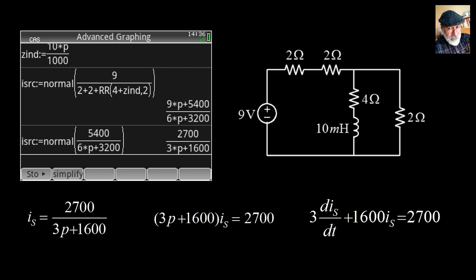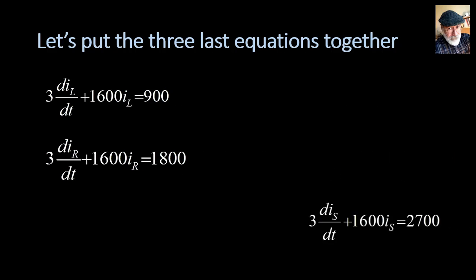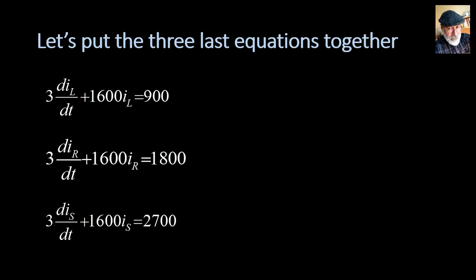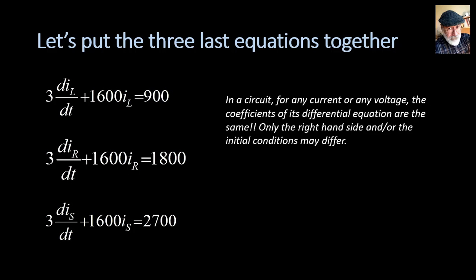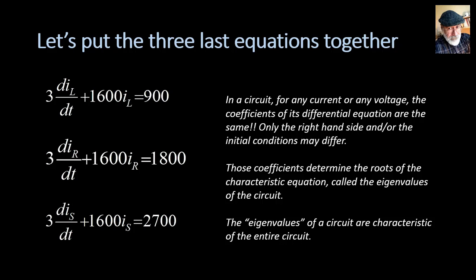Why have I done this three times for three different currents? Observe: copying the three differential equations to the same page — for the inductor current, the resistor current, and the source current — notice that the coefficients on the left-hand side are the same (3 and 1600). Only the right-hand side differs. For any current or voltage in a circuit, the coefficients of its differential equation are the same; only the right-hand side and initial conditions may differ. These coefficients determine the roots of the characteristic equation — what mathematicians call the eigenvalues — and these are the eigenvalues of the entire circuit.